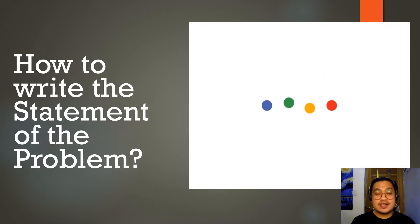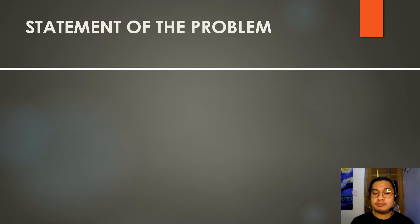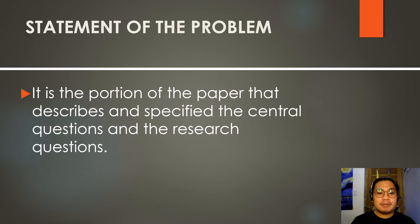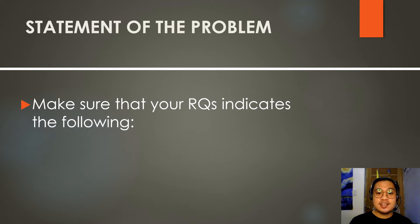Our next point of concern is how to write the statement of the problem. The statement of the problem is the heart of the research paper because it contains the important details regarding your paper — such as the problem and the research question. It also describes and specifies the central question and the specific research questions. The primary component of the statement of the problem is the research question.